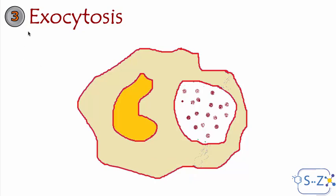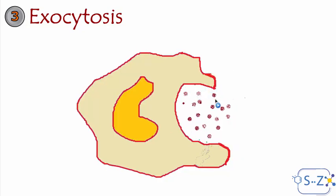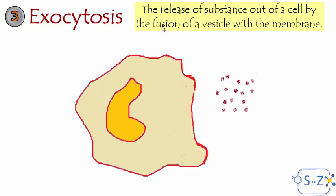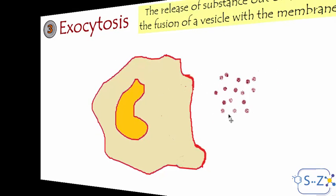The last type of active transport is exocytosis. 'Exo' means outside the cell — here the cell wants to release large molecules or waste products. Taking phagocytosis as an example again: after the phagocyte breaks down the bacterium, it needs to release the debris and waste products. These are contained inside a vesicle, which fuses to the plasma membrane and opens up, releasing the molecules outside. Exocytosis is the release of substances out of a cell by the fusion of a vesicle with the membrane, after which the molecule gets outside the cell.